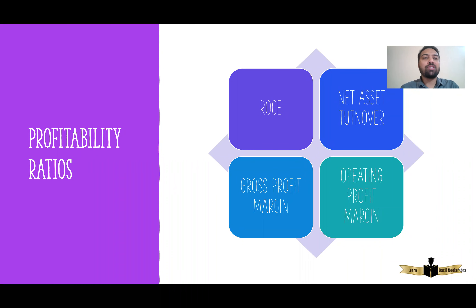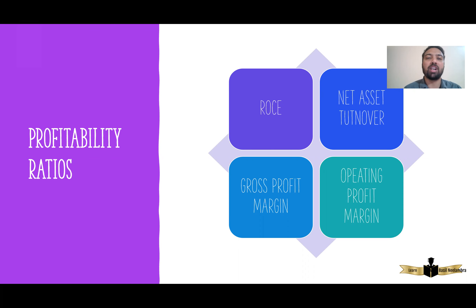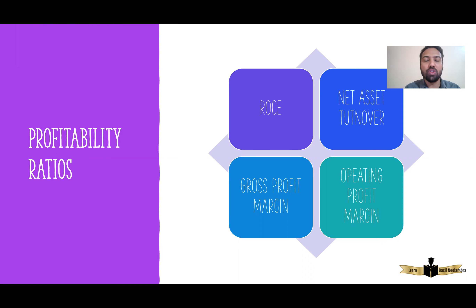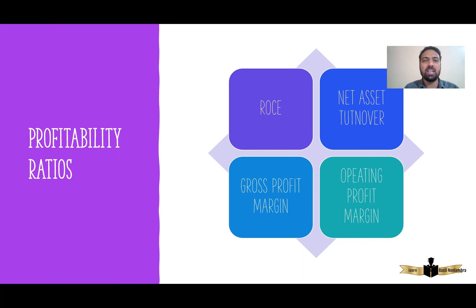Hi everyone. As promised, I'm going to upload the second video on interpretation of financial statements. In the first part, I discussed the most important things: how you have to present your answer — you have to use tables, show your calculations, and state the reason why there is an increase or decrease in a ratio with respect to a given scenario. We also went through the different types of ratio analysis questions that will be asked.